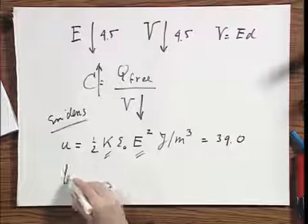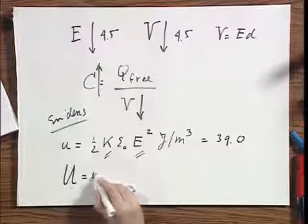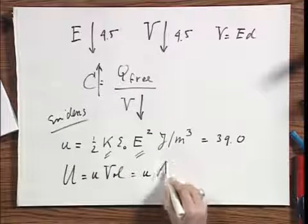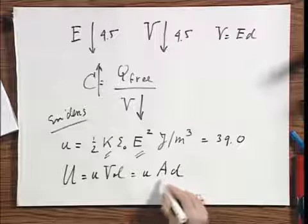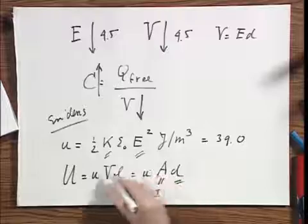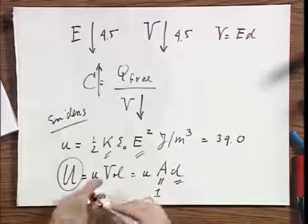Since you know, if you want to know the total u, you have to take the little u times the volume, and that is the little u times the area A times the separation d. This was one meter. You are given d, so you can calculate what the total electric energy is in this system.